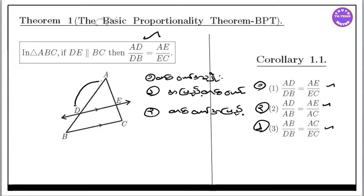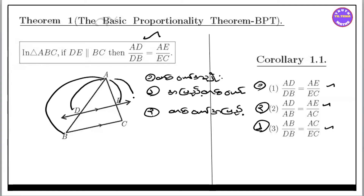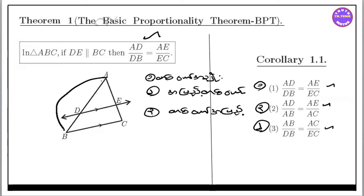B to a class of L and A — AD by DB equals AE by EC. AD by AB equal to AE by AC. AB by DB equal to AC by EC — yeah, we are right, ok.